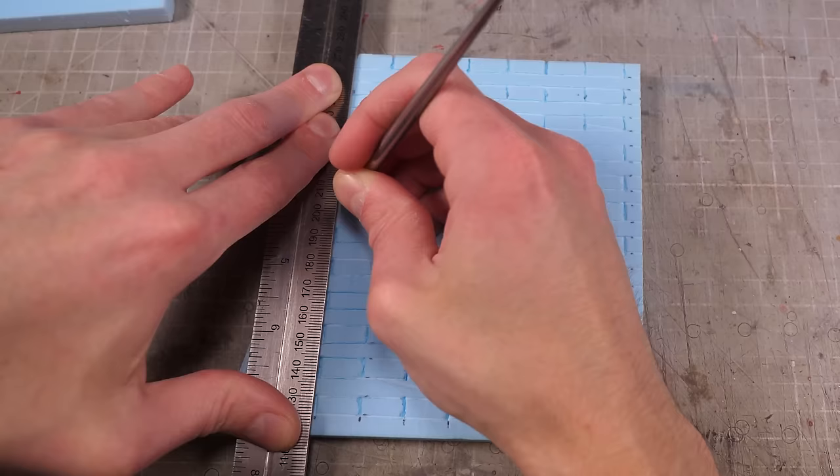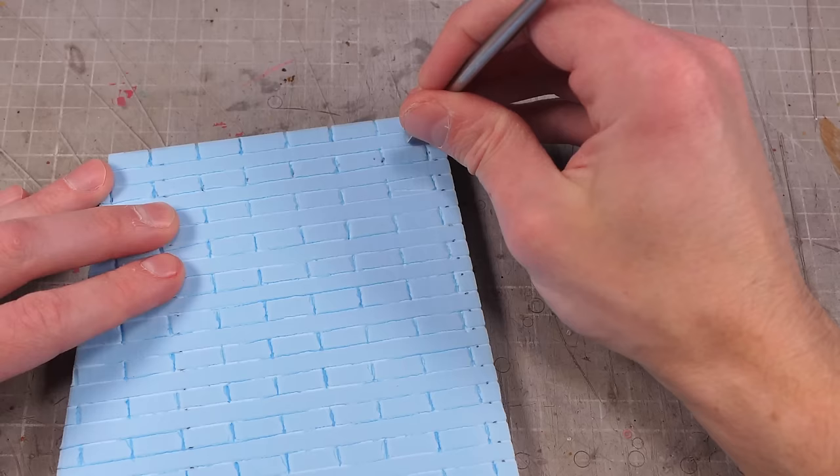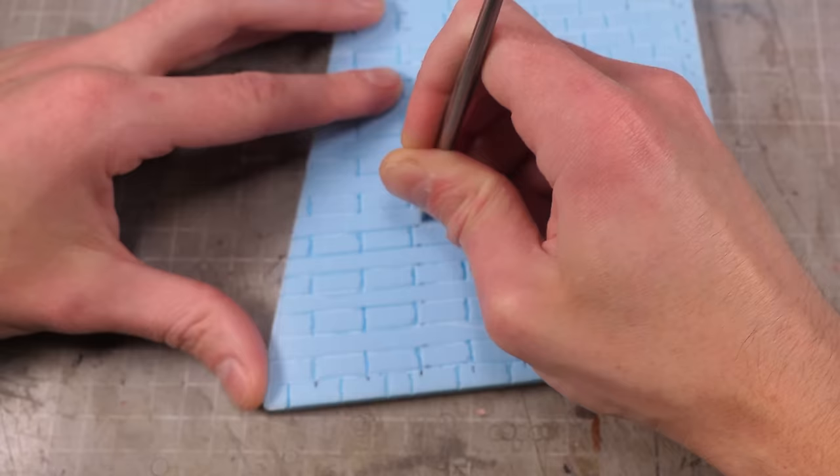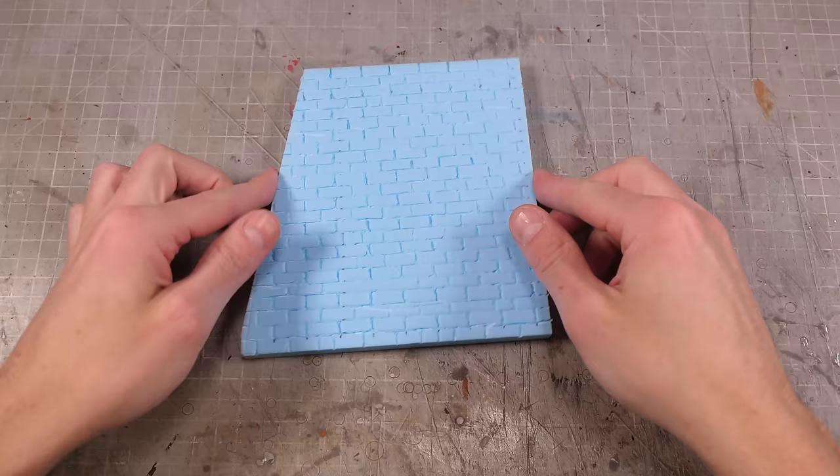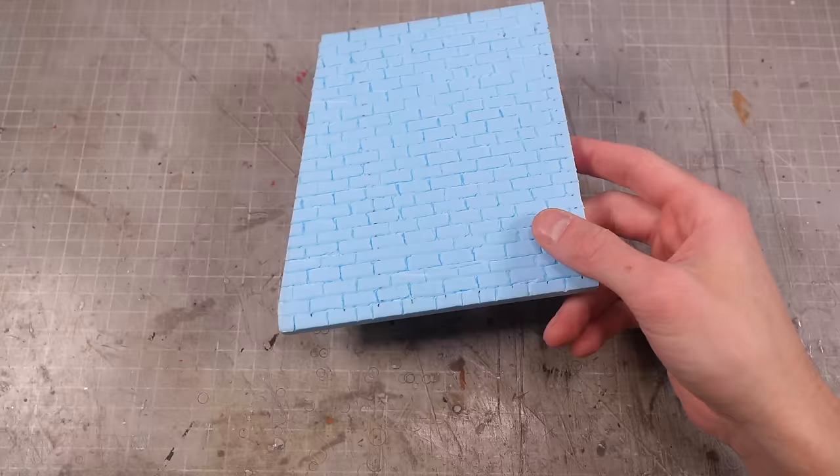With the odd row bricks in place I can do the same thing for the even row but I won't bother measuring since I want them to be a little wonky anyways. And as simple as that I've got a pretty good looking brick wall.